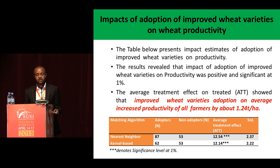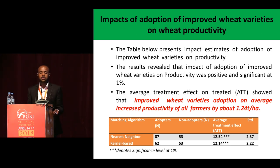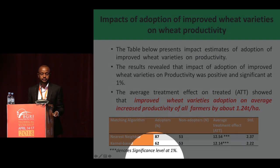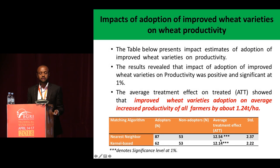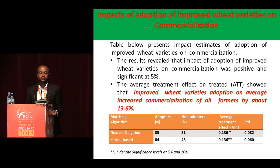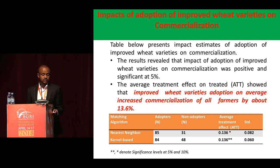When we come to the first estimation — the impact of adoption of improved wheat varieties on wheat productivity — the result reveals that the impact was found positive and significant at 1%. This shows that improved wheat variety adoption on average increased productivity of all farmers by 1.24 tons per hectare, representing about 21.25 to 28.25 percent. There is also a significant positive impact of adoption of improved wheat varieties on commercialization, which on average increased commercialization of all farmers by about 13.6%.